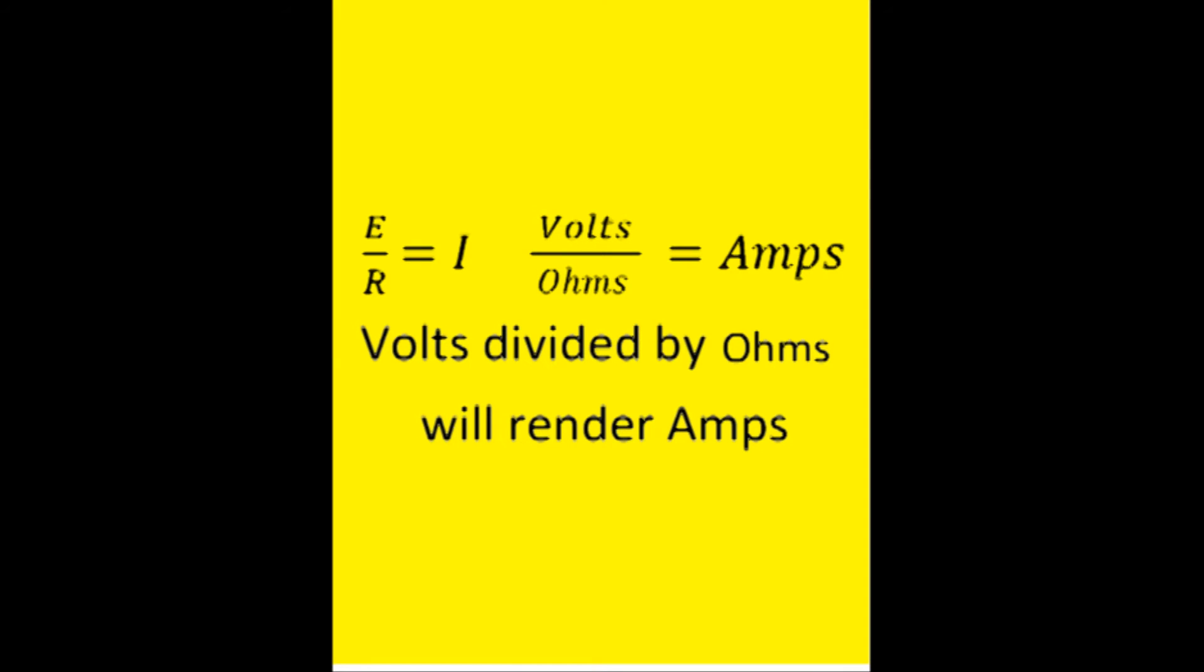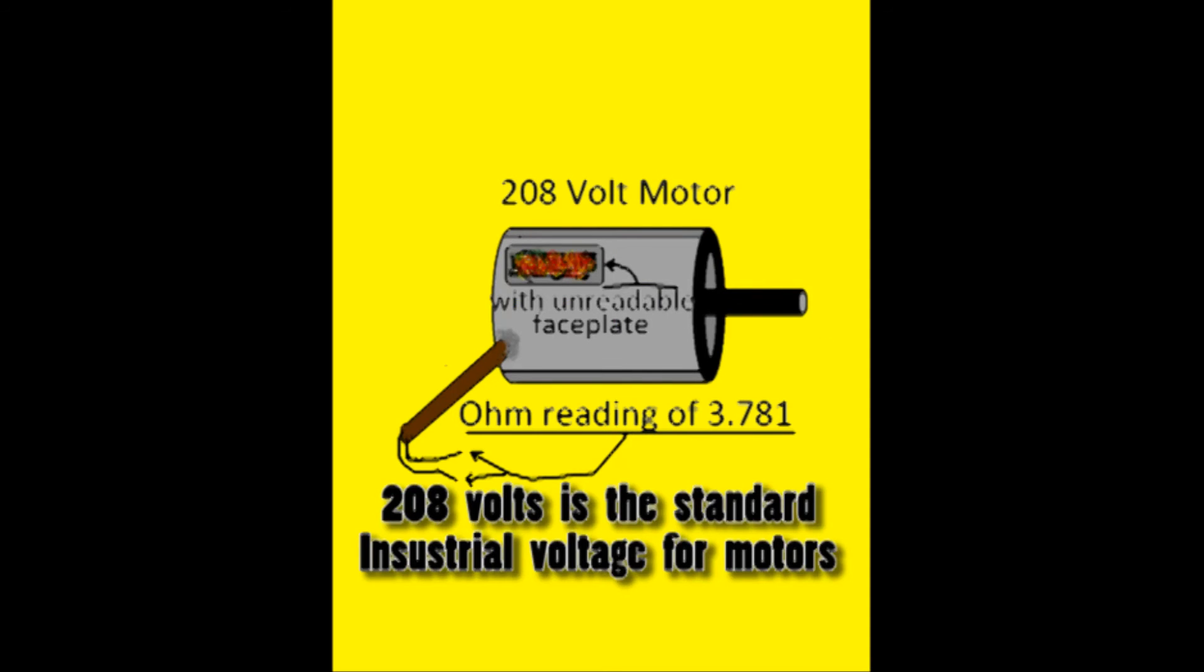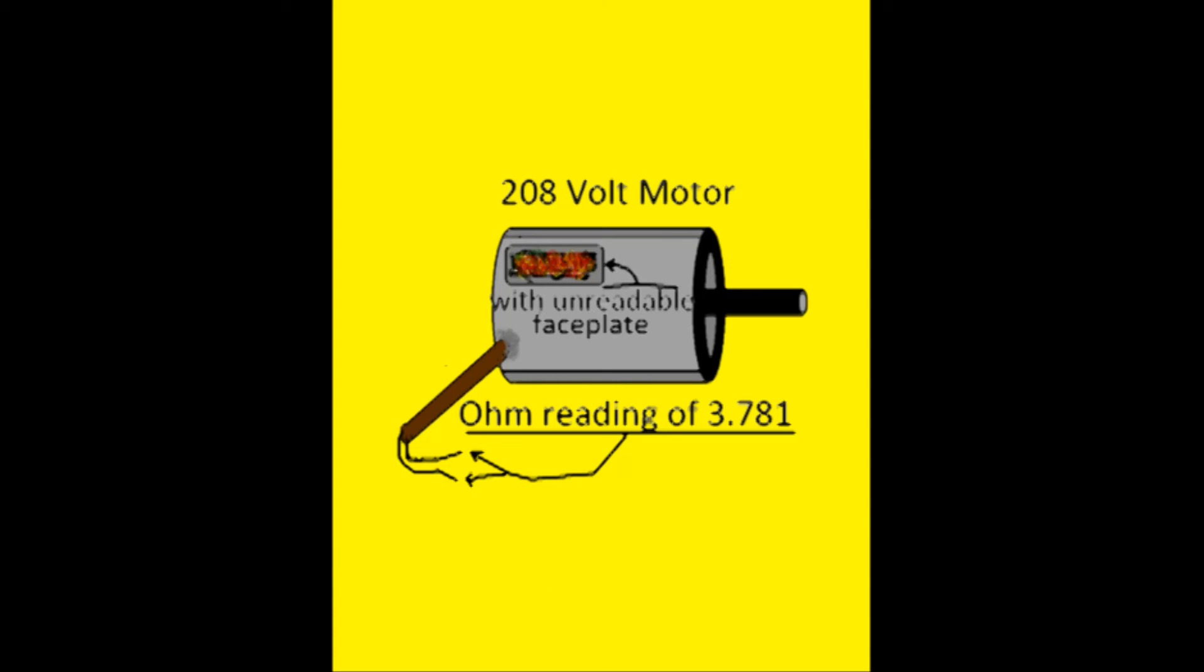Enough chitchat. The formula we're using today is volts divided by ohms gives you amperage. This formula is very useful in determining the ampacity of an electric motor when the faceplate is missing, damaged, or unreadable.